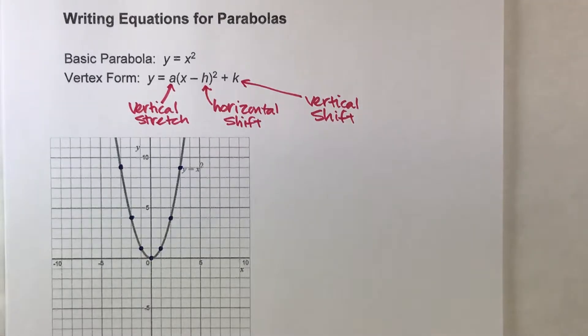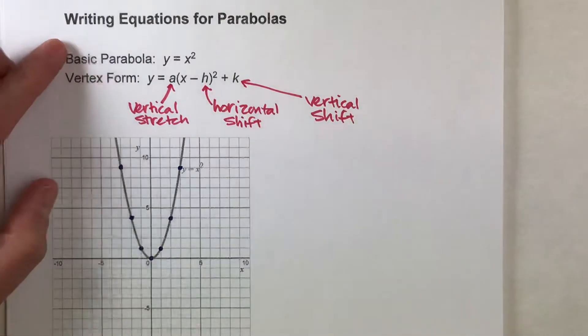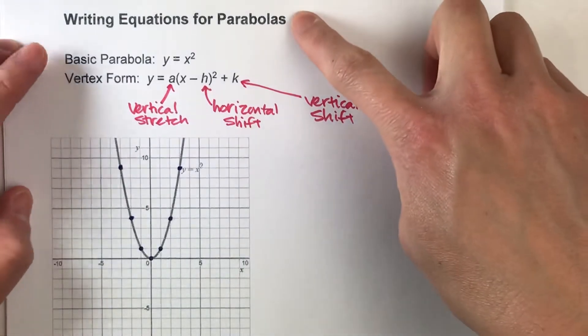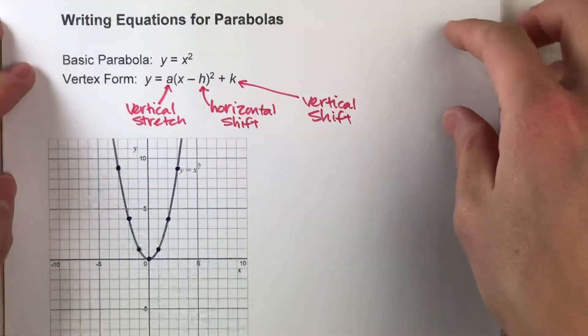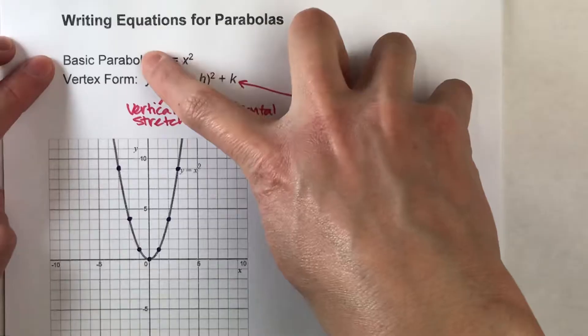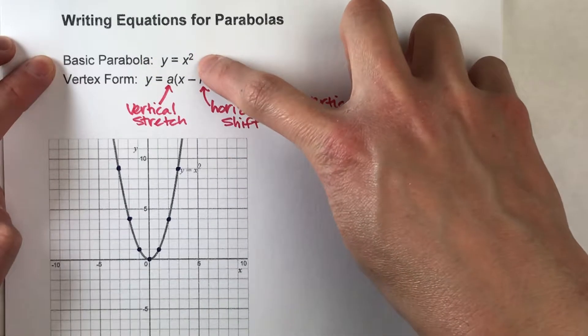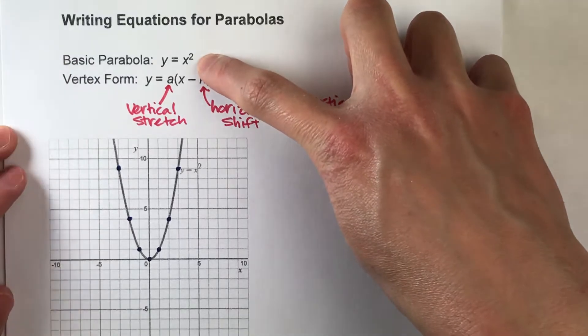Today we're going to be writing equations for parabolas. The first thing you have to know is the basic parabola has an equation y equals x squared.